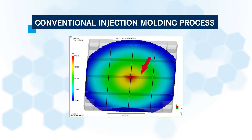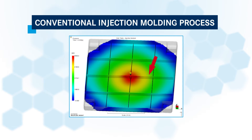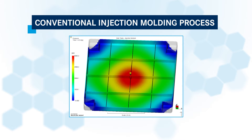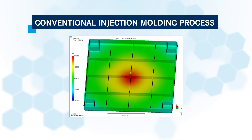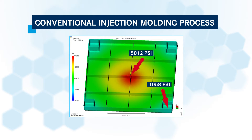This pressure differential causes unequal densities of resin in the part. As the part continues to cool, shrink will occur at different rates causing stress and warp. As you can see from the mold filling analysis, the cavity pressure near the gate is about five times higher near the gate than it is at the corners of the part.